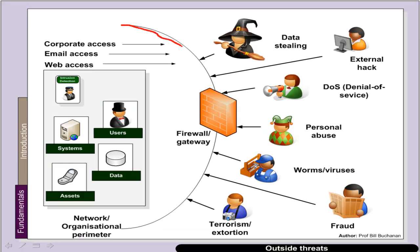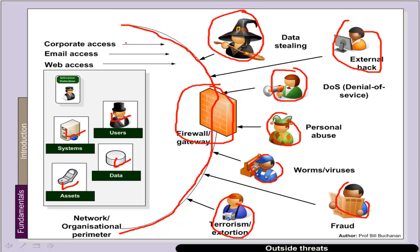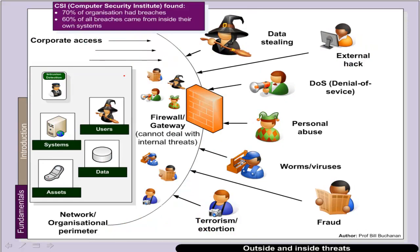We typically have a perimeter for our organisation and then a firewall, whose objective is to keep out intrusions such as data stealing, external hacks, denial of service, personal abuse, worms and viruses, fraud, and terrorism. What we are trying to protect are our systems, our assets, our data, and our users. The biggest problem though is that many breaches actually come from inside the corporate network, so the gateway firewall can only solve some of the problems — our issues could actually be on our own site.